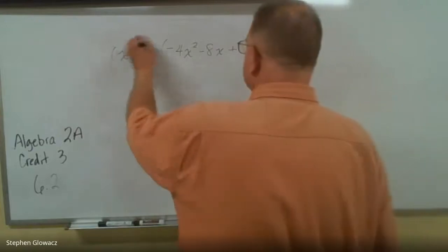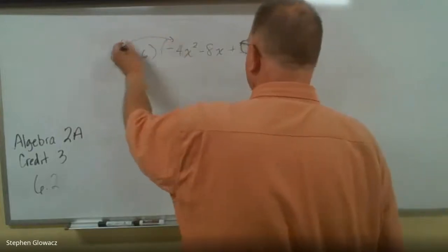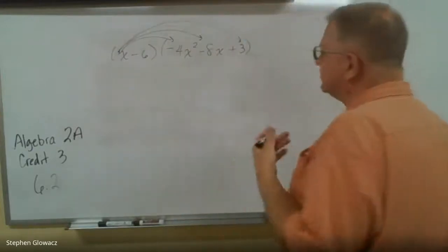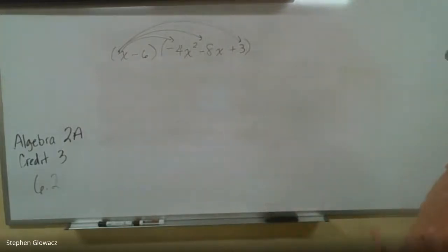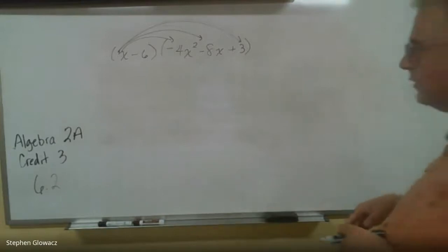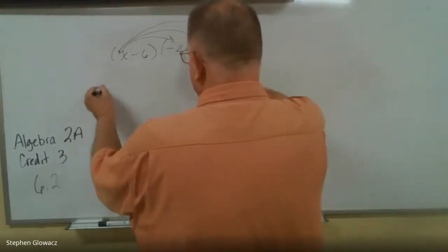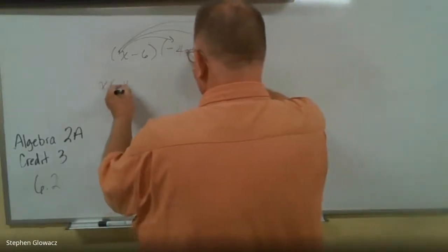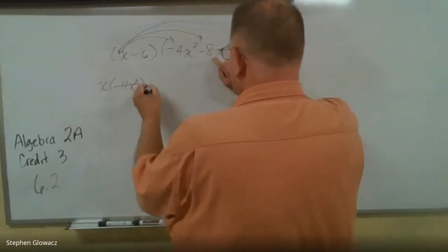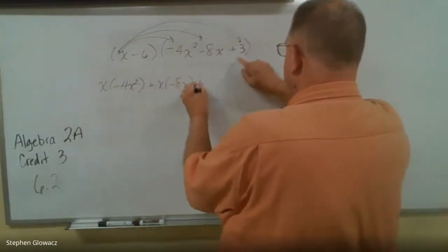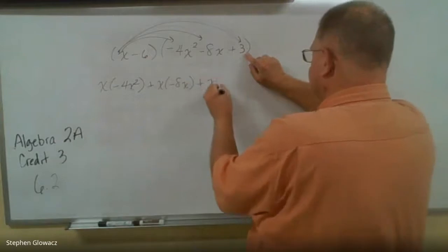Let's go ahead and draw the arrows. I do that as much for me as for you — it's a visual that helps keep things organized. So we have x times negative 4x², x times negative 8x, and x times 3.